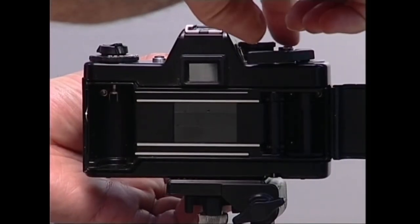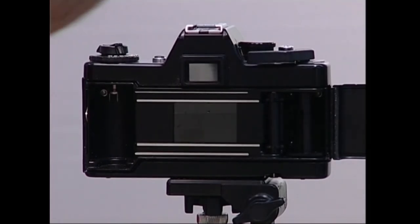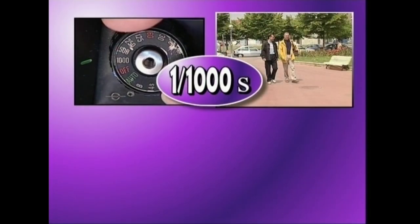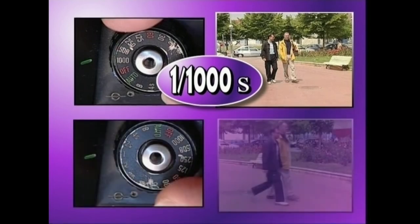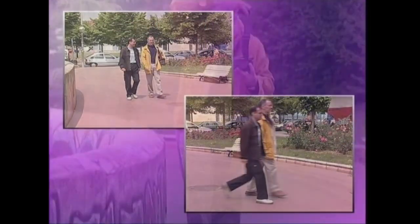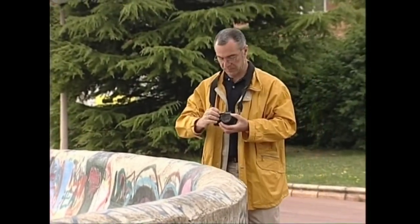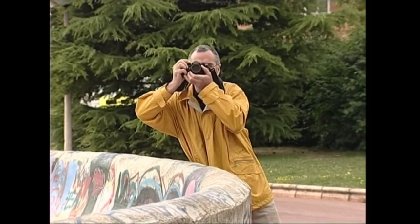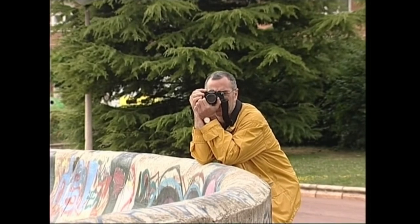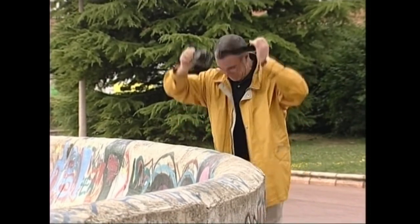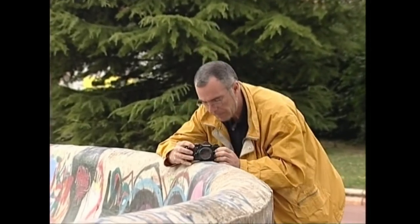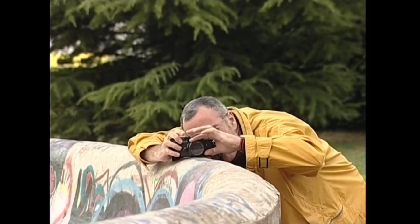Obturadorea lastertasunak esango digu zenbat denbora egongo den pelikula argitan. Lastertasuna handia bada, mugimendua gelditu egiten dugu argazkian. Lastertasuna txikia bada berriz, irudi lausoa aterako da. Obturadorea lastertasunak, subjektuaren mugimenduaz ez ezik argazki kameraren dardarak ere jasotzen ditu. Hori saihesteko, argazki kamera sendo lotu behar dugu, batez ere, obturadoreari lastertasun txikia agintzen diogunean. Guretzat, postura erosoa hartzea, argazki kamera tripode baten gainean jartzea edo, besteri gabe, gainazal finko baten gainean kokatzea, aski sanda daiteke argazki kamera geldirik egon dadin.